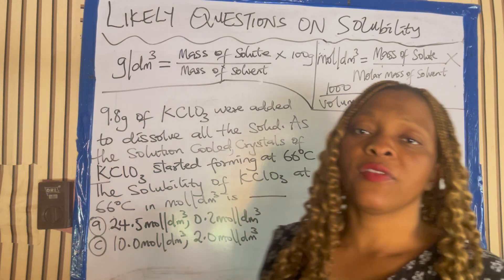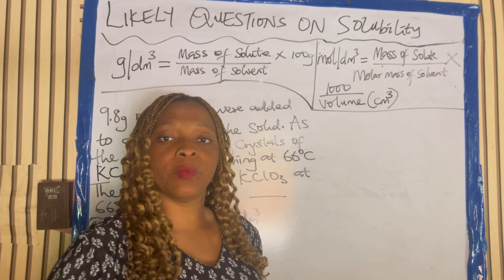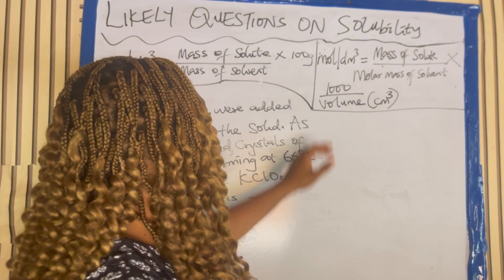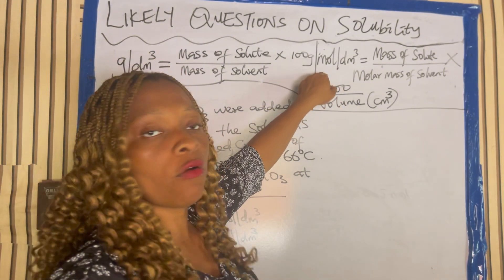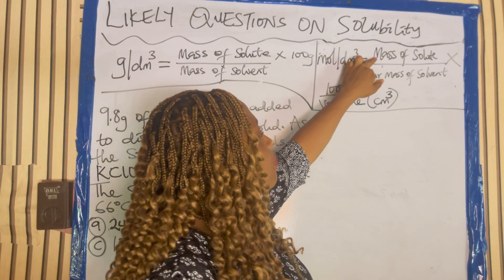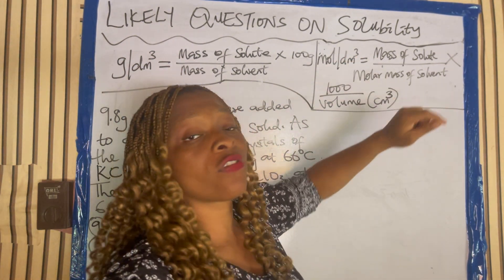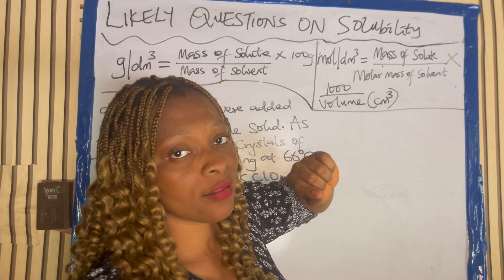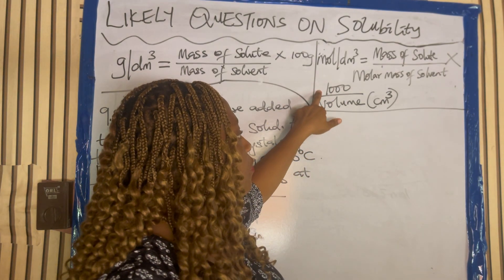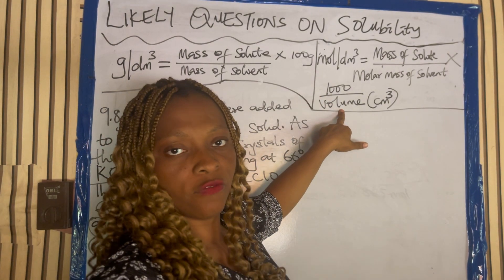If the question says calculate the solubility in mole per dm cube, then you are going to use the second formula which is mass of solute over molar mass of solvent times 1000 over volume.